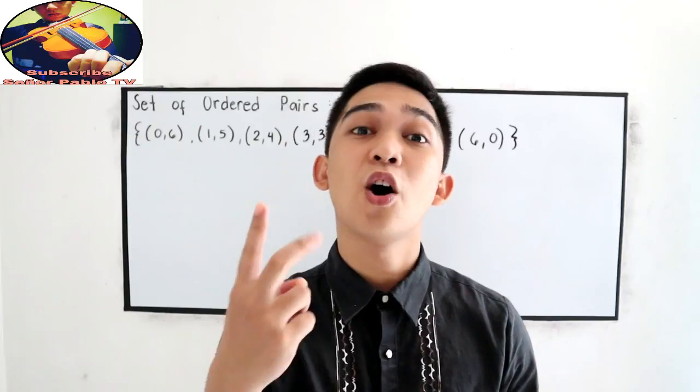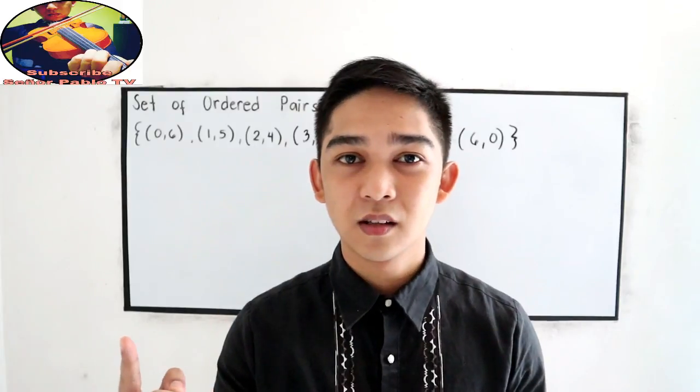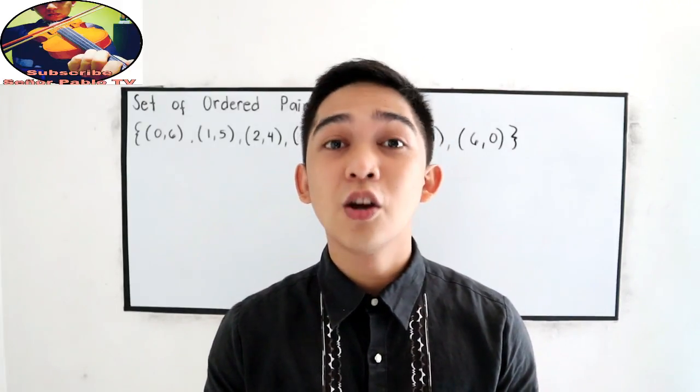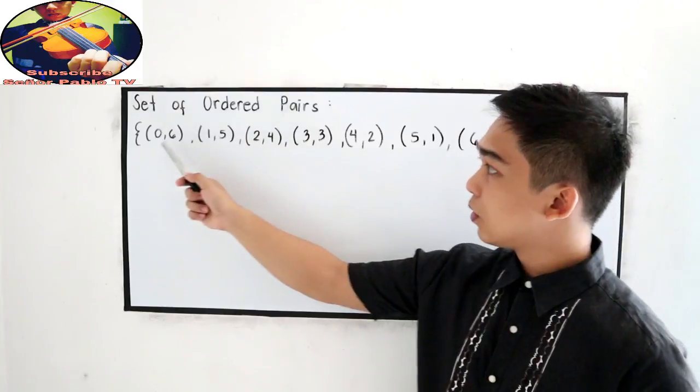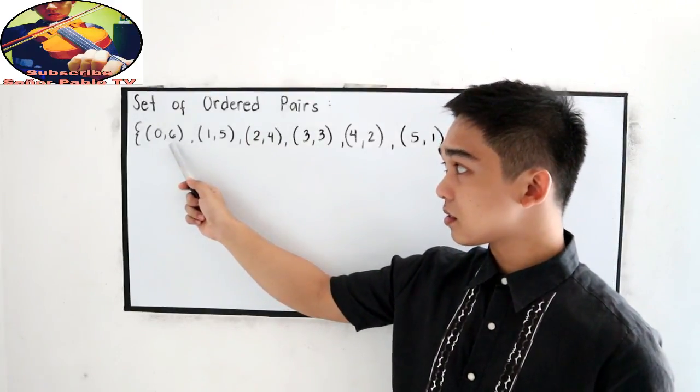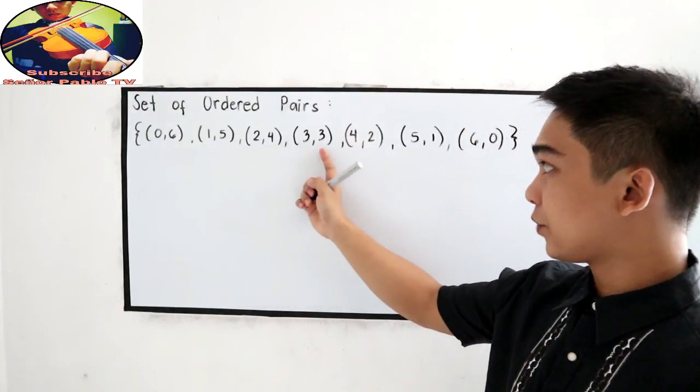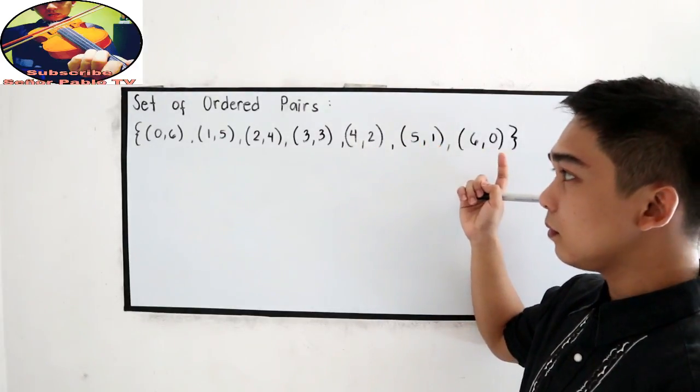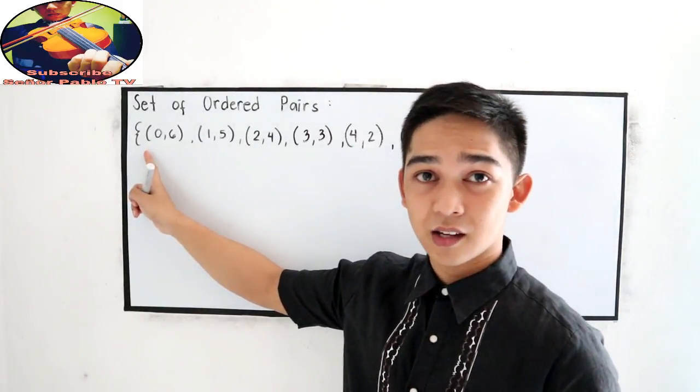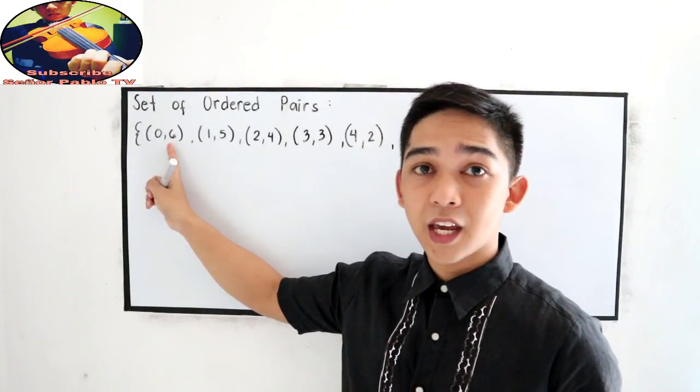A set of ordered pairs is composed of x-coordinate and y-coordinate. The x-coordinate is also known as the abscissa and the y-coordinate is also known as the ordinate. Let's say we have the following ordered pairs: (0,6), (1,5), (2,4), (3,3), (4,2), (5,1), (6,0). We know that the first point is also called the abscissa or the x-coordinate, and the second is the y-coordinate or the ordinate.